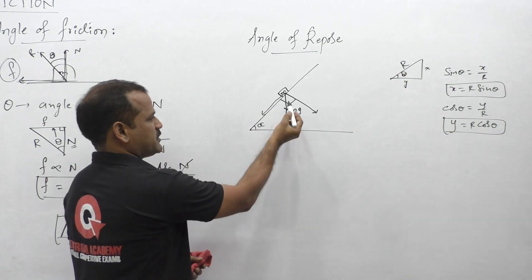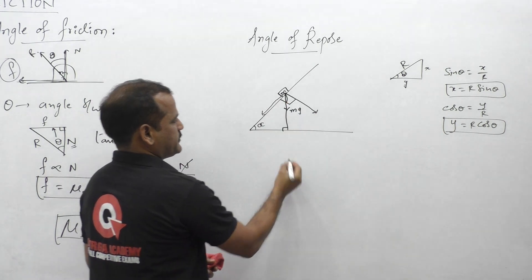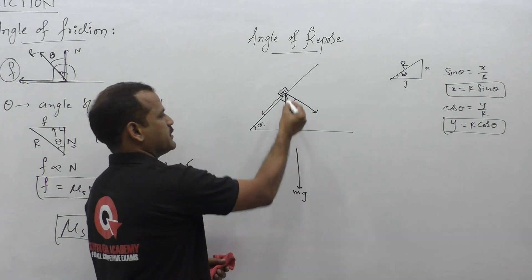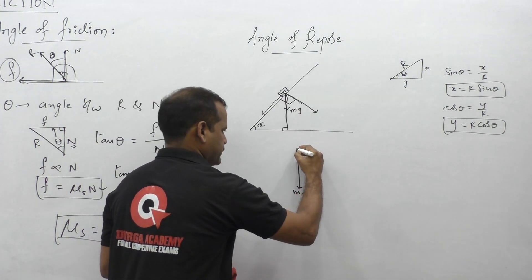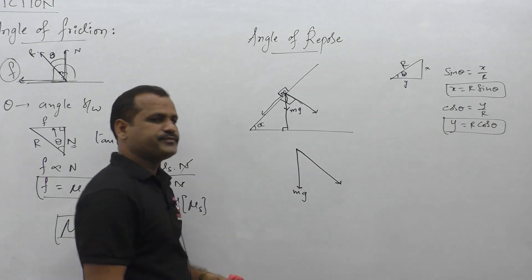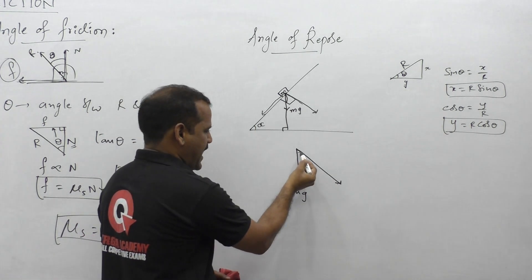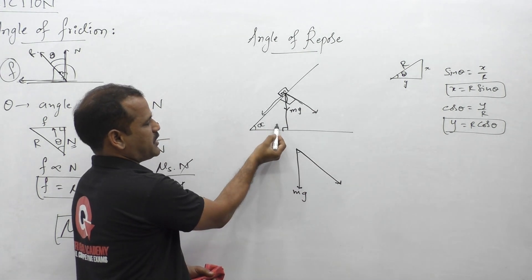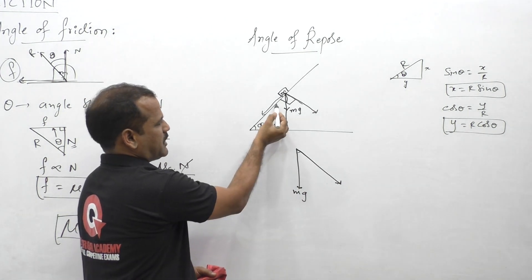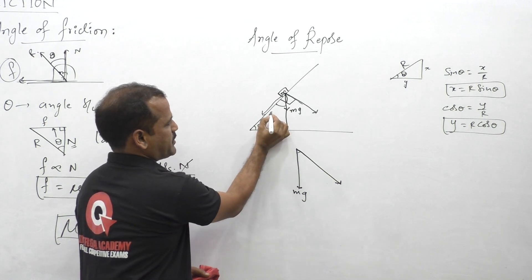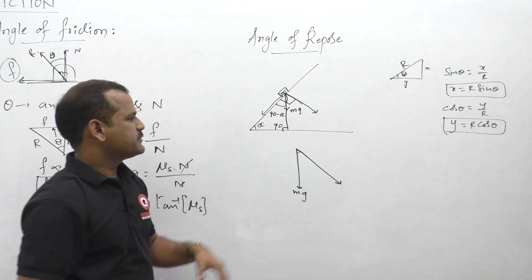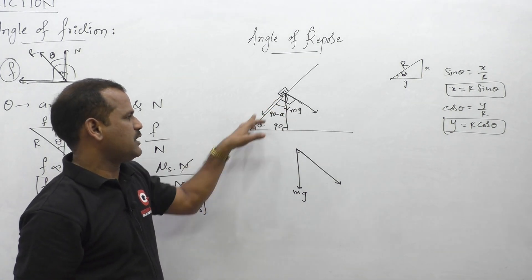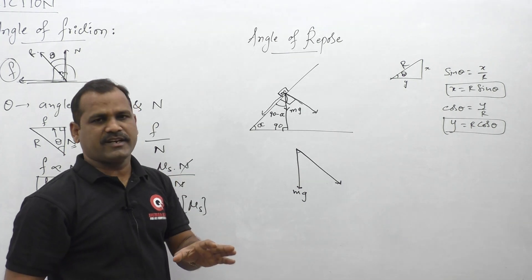Now observe the mg component. We need to determine the angle between the two components. If this angle is alpha and this is 90 degrees, then observe this angle should be 90 minus alpha. The sum of these two angles should be 90 degrees, since the sum of three angles in a triangle is 180 degrees.